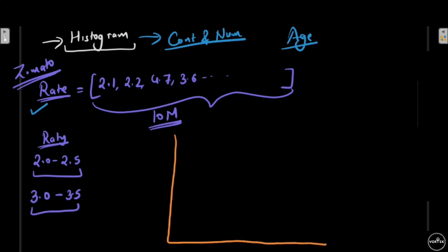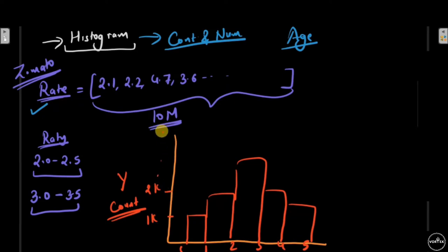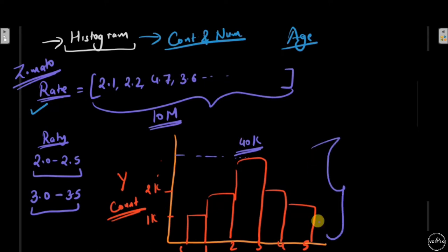Imagine a simple histogram: we have multiple bars. On the x-axis we have rating values — 0, 1, 2, 3, 4, 5. On the y-axis we have count — 1k, 2k, and so on. If I ask what is the count of hotels with a rating between 2 and 3, you can simply read it off — let's say the count is 40k. Whenever you have to show the distribution of a continuous numerical feature, think of a histogram.